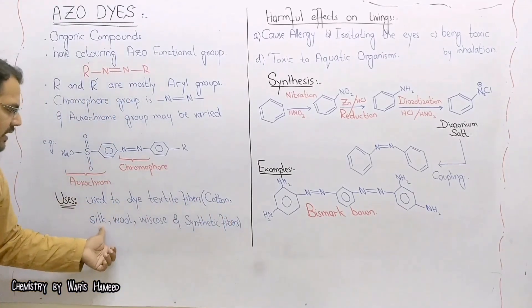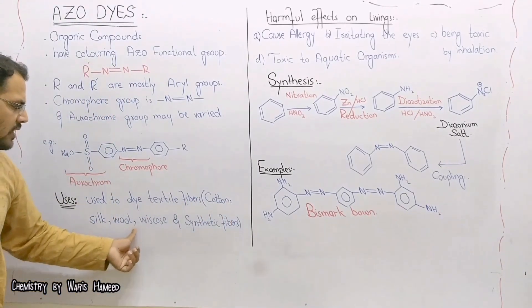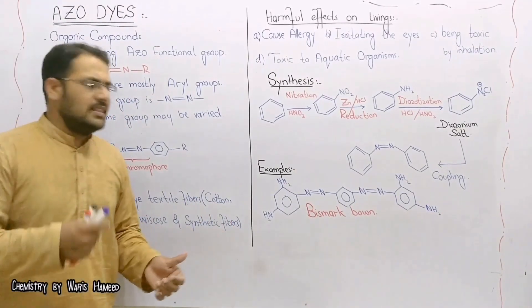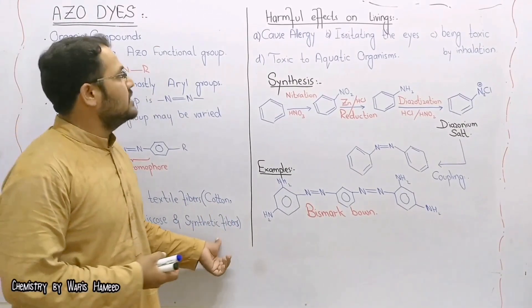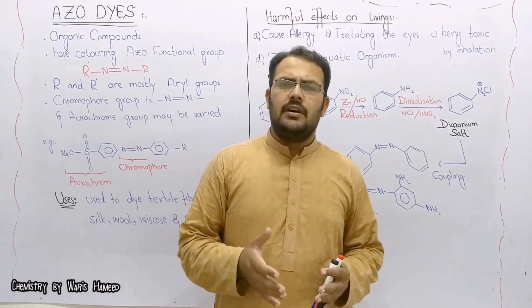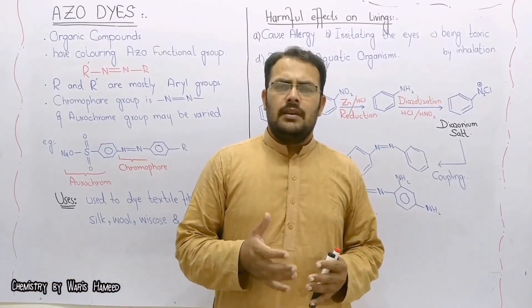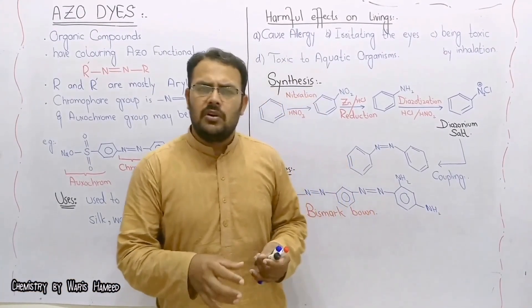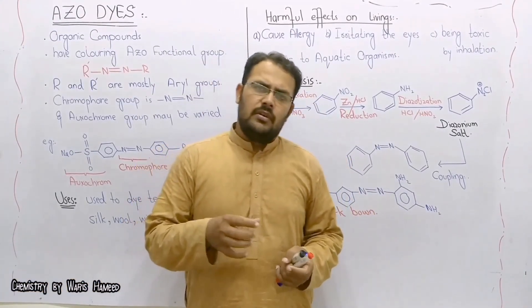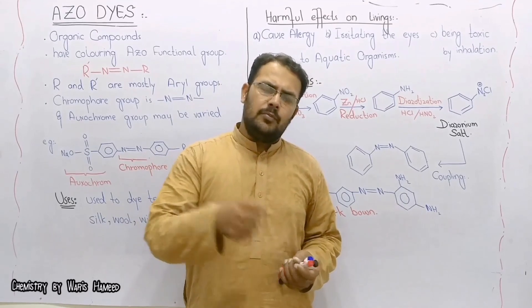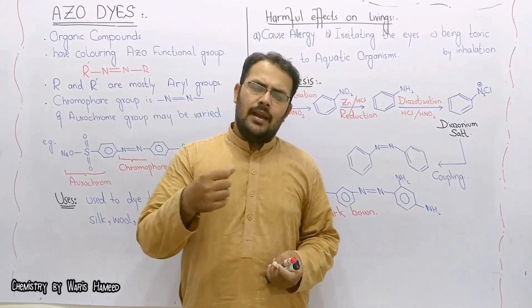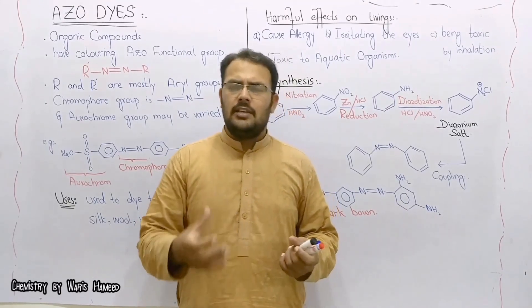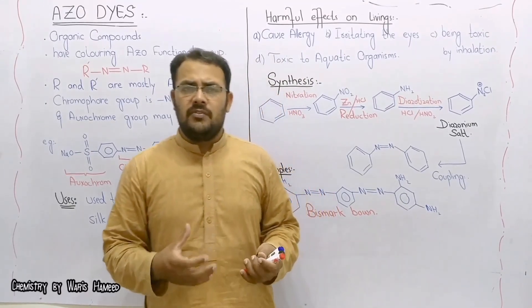Azo dyes are used for dyeing textile fibers like cotton, silk, wool, viscose, or any synthetic fibers. On any dye, it has the ability to reflect some part of light back, and that reflected part of light is actually what we perceive as color.